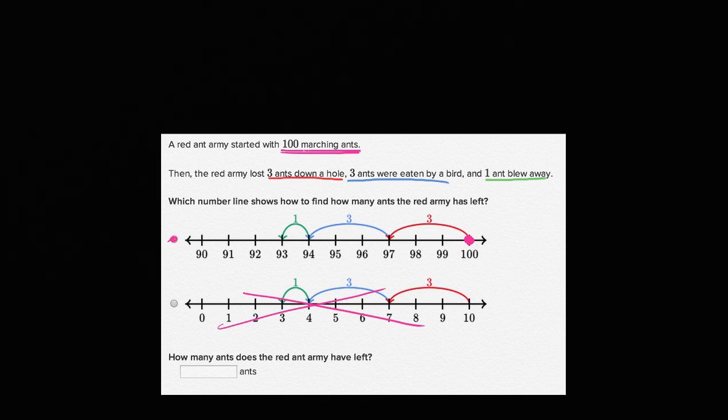So we start with 100. And then we lose three ants down a hole. So we're going to go down. Remember, we're losing ants. So we're going to go to the left of the number line. We're going to go to lower values. We're going to go down one, two, three. So these are the three ants we lose down a hole. Then we have three that were eaten by a bird. So you're going to lose three more. That's those three right over there. You get us to 94 ants left. And then we have the one ant that gets blown away.